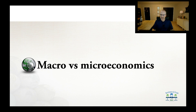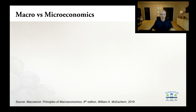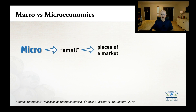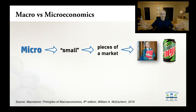Now, what's the difference between macroeconomics and microeconomics? This is actually very easy to understand — just look at the words 'macro' and 'micro.' Micro simply means small. So microeconomics is the study of how we fulfill unlimited wants with limited resources in a small piece of the market, such as on an individual or family basis.